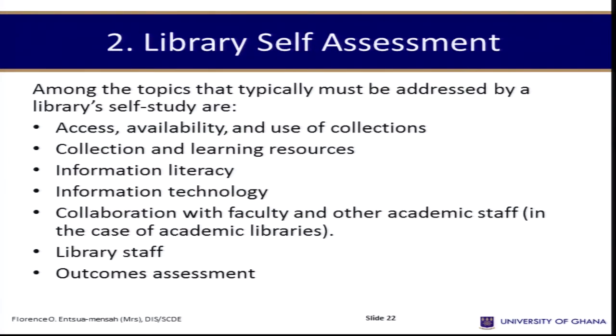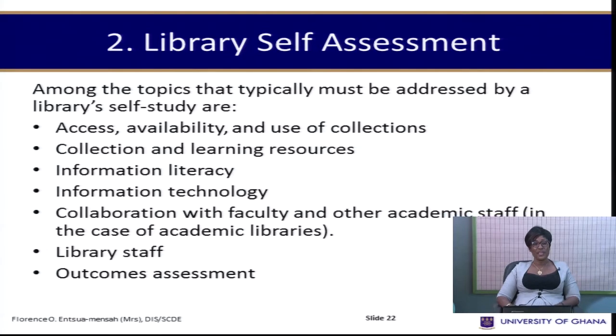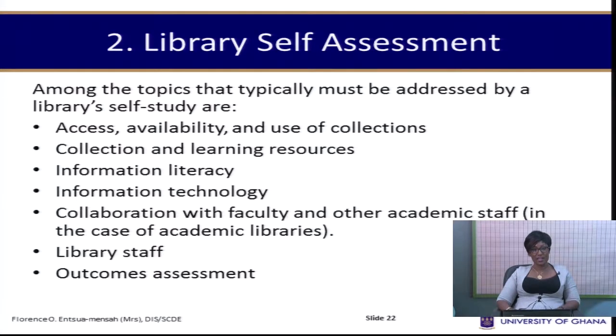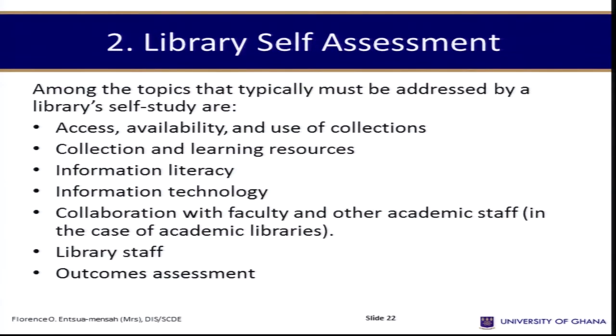The next method is library self-assessment, which covers access, availability, and use of the collection. The library must examine how users assess information availability and how they use the collection. This also includes reviewing collection and learning resources, information literacy services, information technology, collaboration with faculty and academic staff in academic libraries, library staff, and outcome assessment.